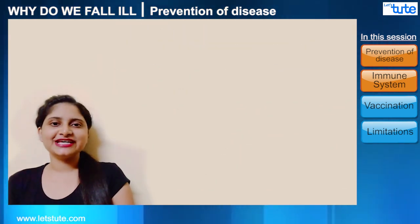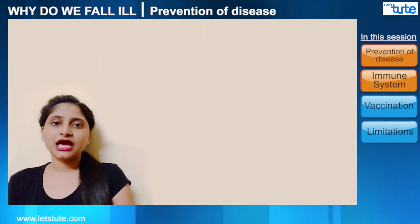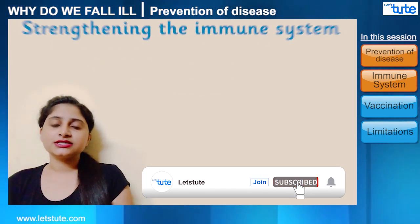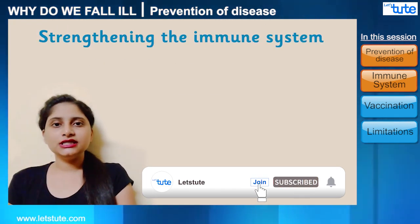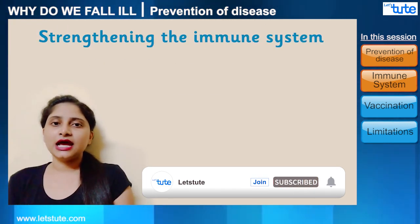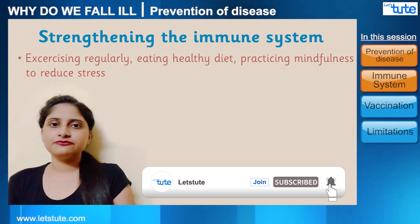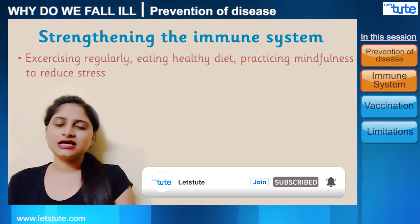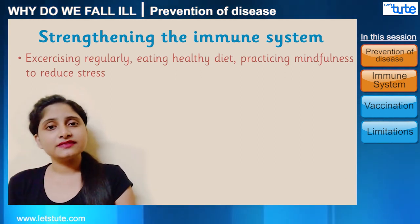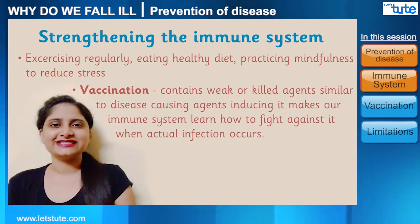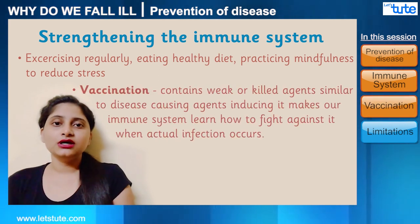Coming back to strengthening our immune system — this can be done by exercising regularly, eating a healthy diet, and practicing mindfulness in order to reduce stress. A specific method to do so is through vaccination.